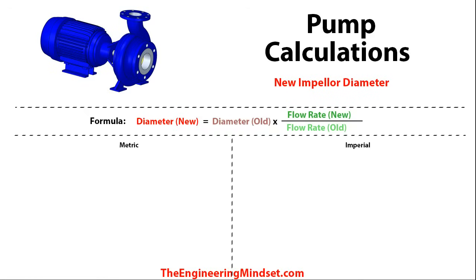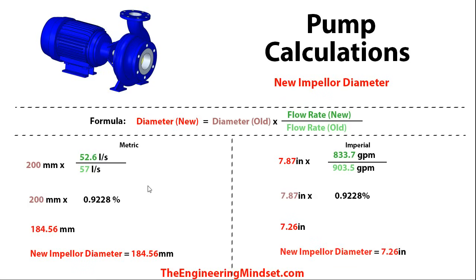The last one we're going to look at is the impeller diameter. If you were to adjust the flow rate and wanted to achieve a new flow rate, what diameter impeller would you need? This is usually used when the impeller is being trimmed down. Originally it was 57 litres per second or 903.5 gallons per minute, and the new flow rate to achieve is 52.6 litres per second or 833.7 gallons per minute. The two units of measurement cancel out, leaving a ratio or percent. Multiplying that out gives a final answer of 184.56 millimetres diameter or 7.26 inches.